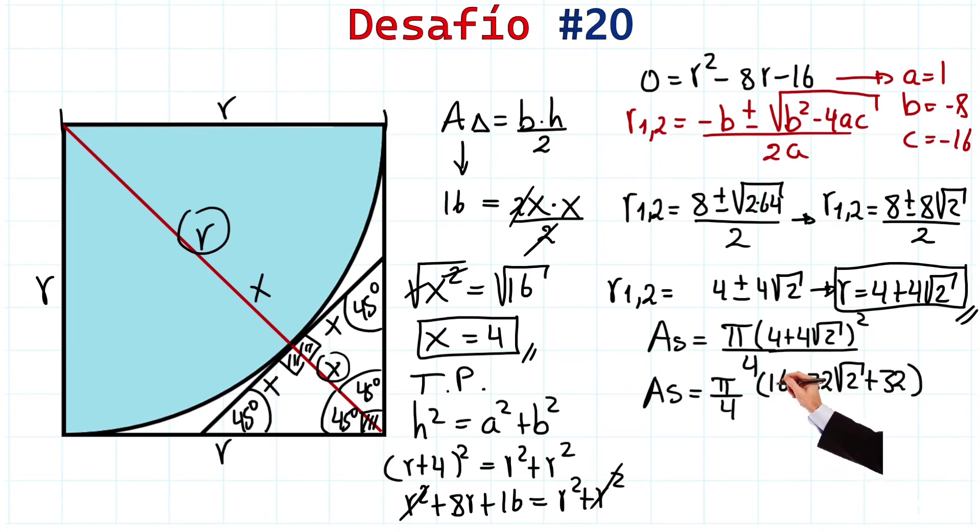So, here we have 16 and 32. 10 plus 30 gives me 40, and 6 plus 2 gives us 8. The sum gives us 48. So, here we have 48. We can factor out 4 from here. Of course.